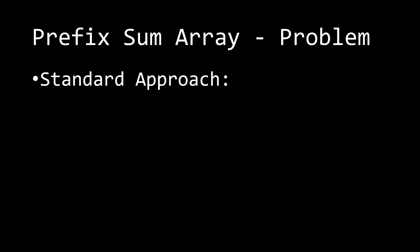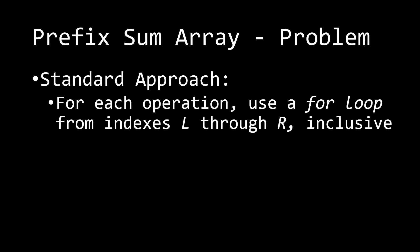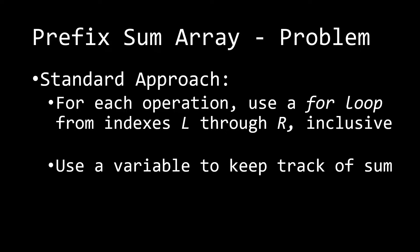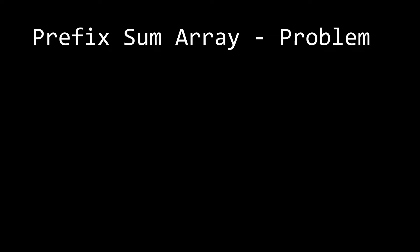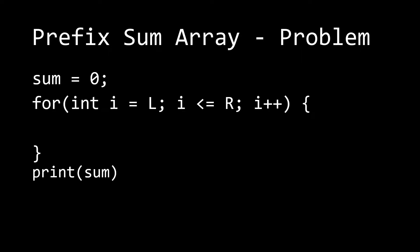The standard approach for this problem — take the sum between some range of values in an array — would be for each operation, use a for loop from indexes L through R inclusive. You would use a variable to keep track of the sum and then output the sum variable. We might have some sum variable starting at zero, a for loop that goes from L all the way to R, and in between we have sum plus equals A of i.